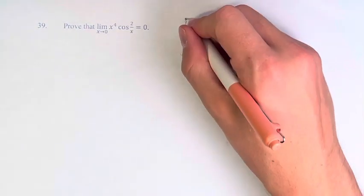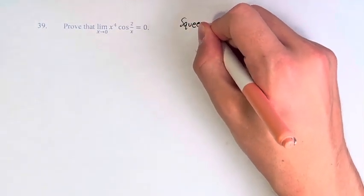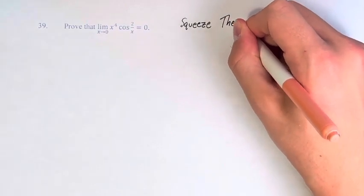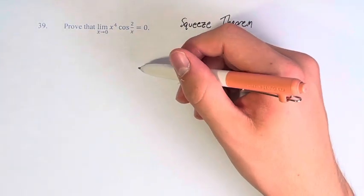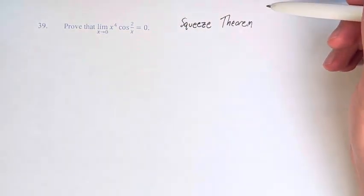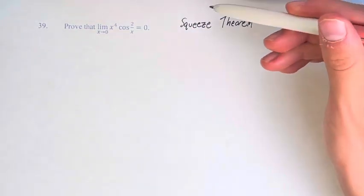To do this, we're going to use the squeeze theorem, which states that if a function is between two other functions that approach a similar limit, then the function in the middle has the same limit as well.